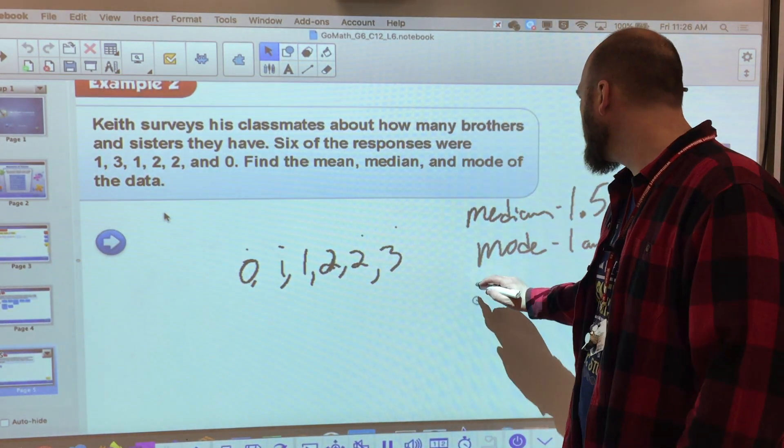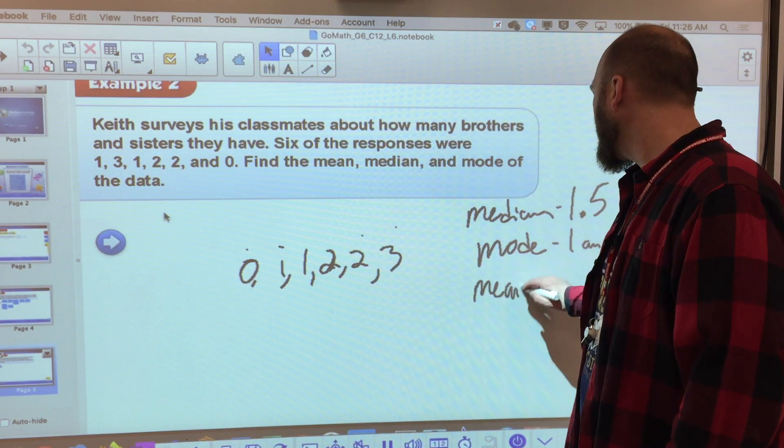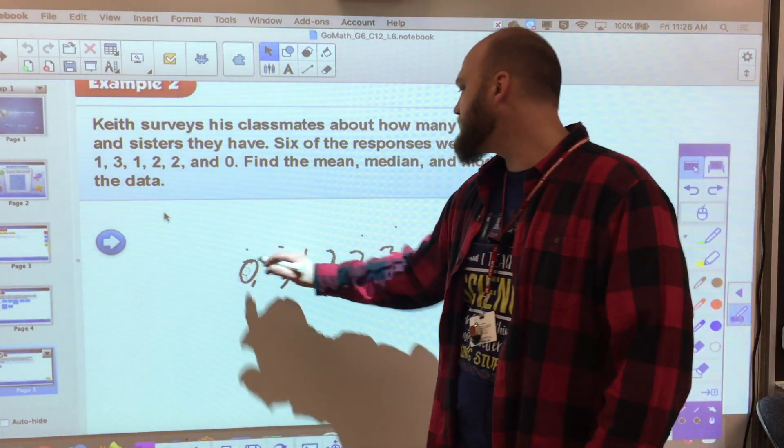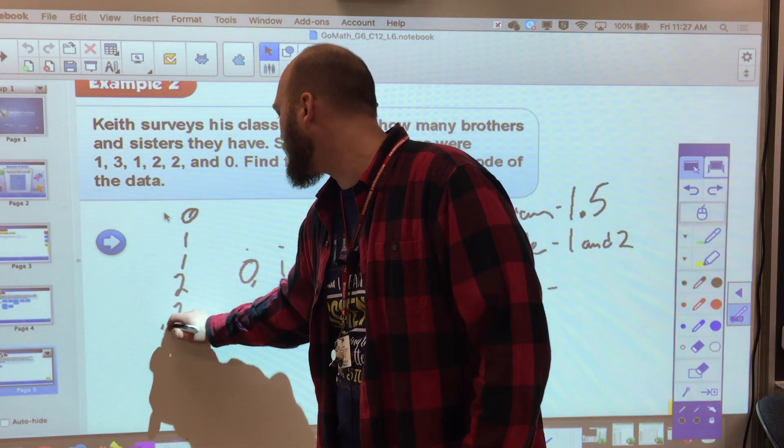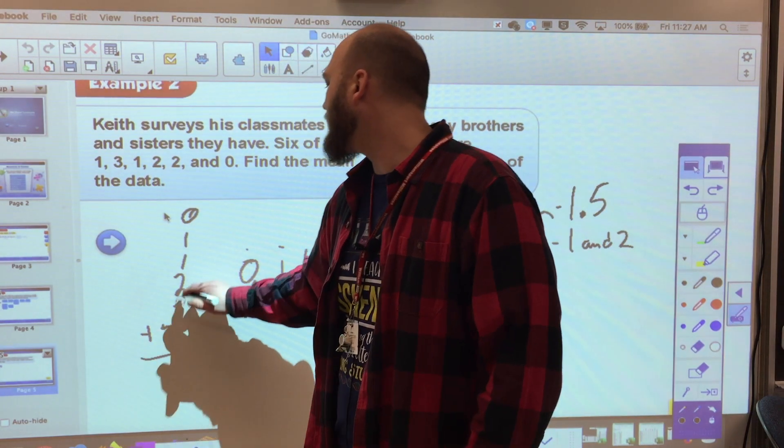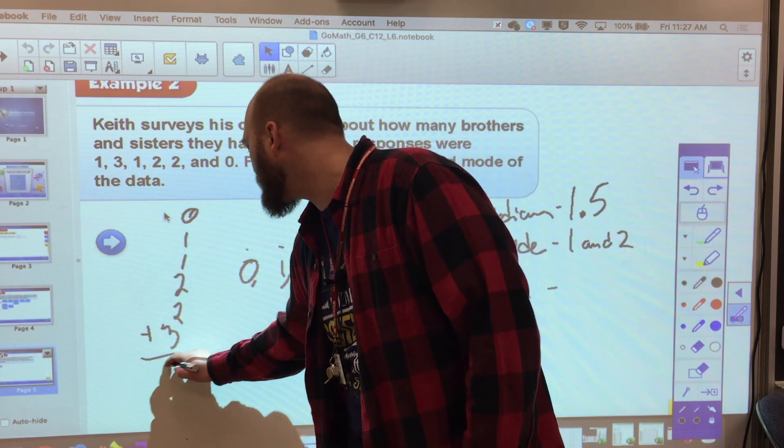So the last part I need, obviously, is my mean. And this is the part that takes the longest. I want to add them all up. Zero, 1, 1, 2, 2, and 3. 5, 6, 7, 8, 9, 0. That's 9.